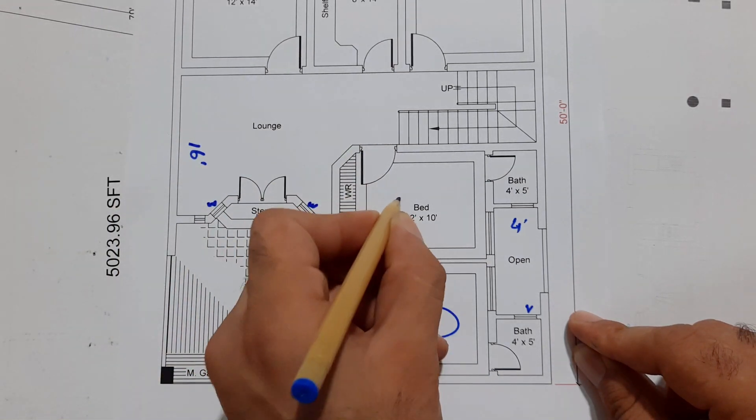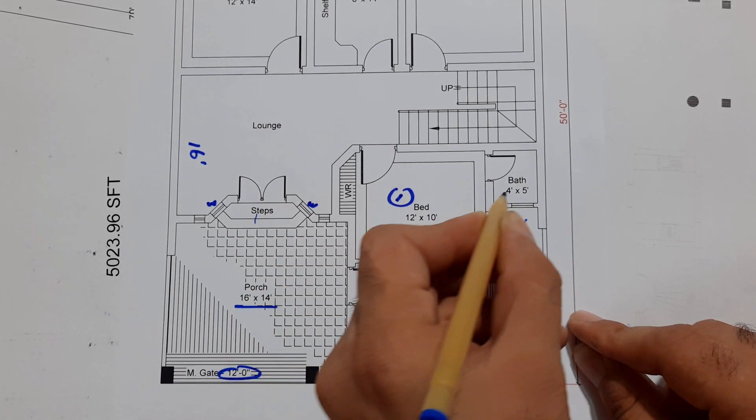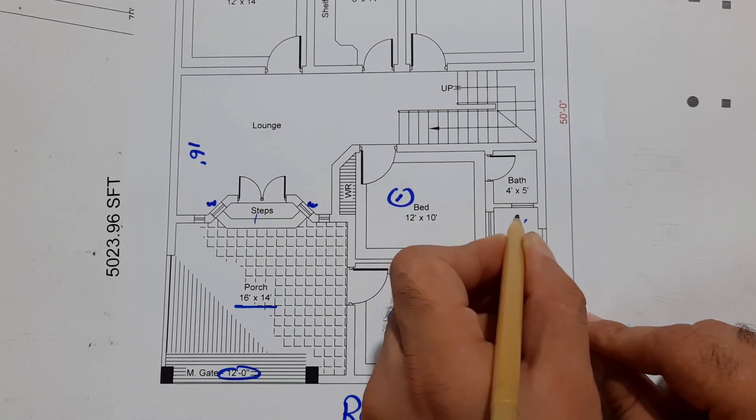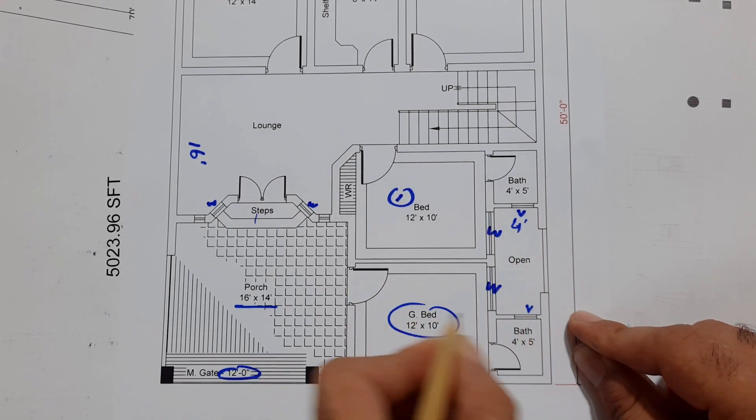Windows here, here. This is the first bed which size is 12 by 10 feet. This is its bath, 4 by 5 feet. This is its ventilation to this, this is window, this is other window for this guest bed.